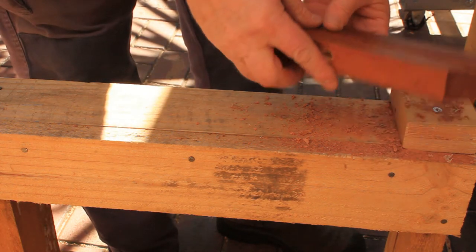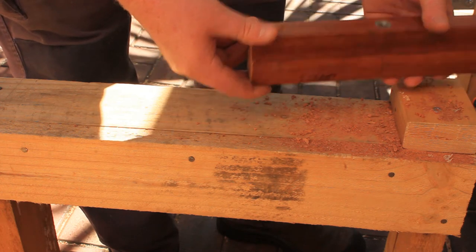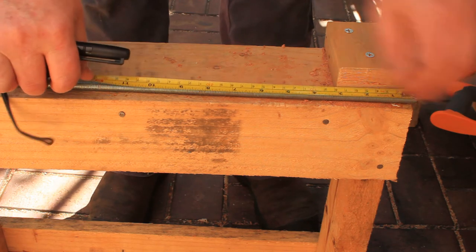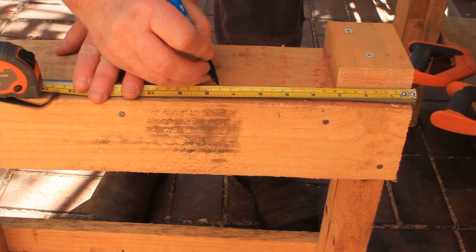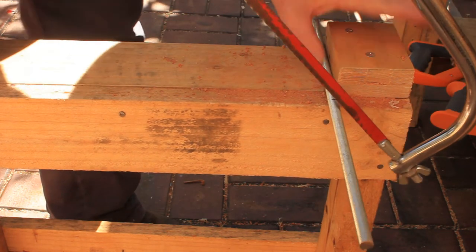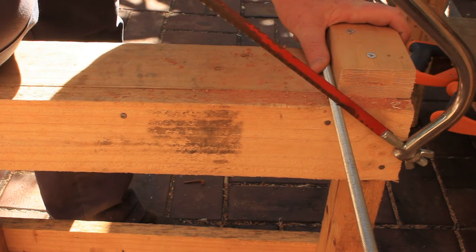Measure and mark the threaded rod as shown in the plans. Our saw stool stop block won't hold the threaded rod securely enough to cut it with the hacksaw. So we need to use a different way.